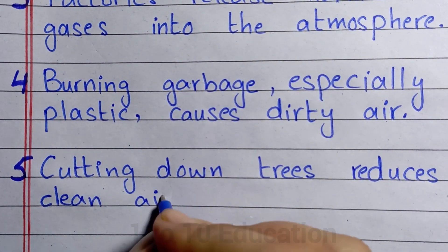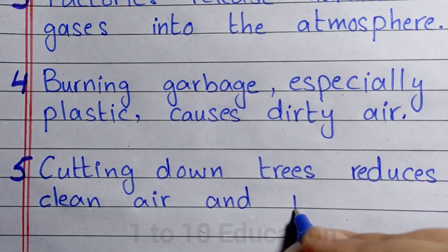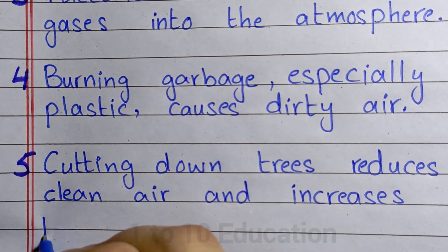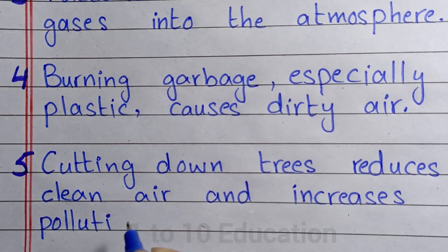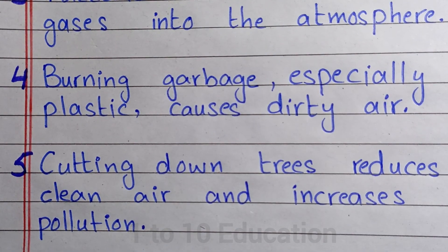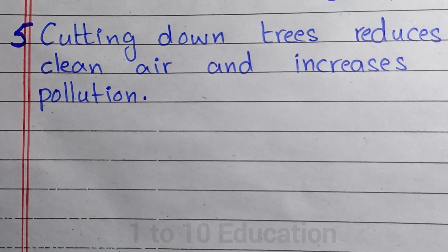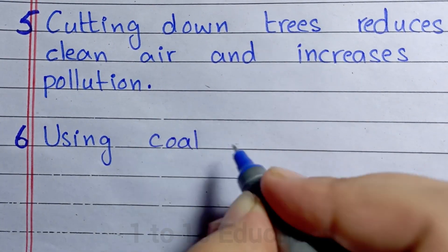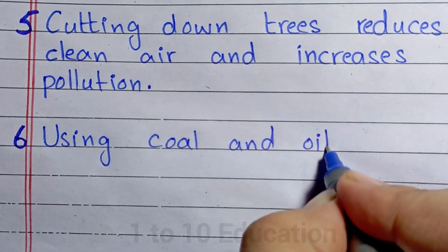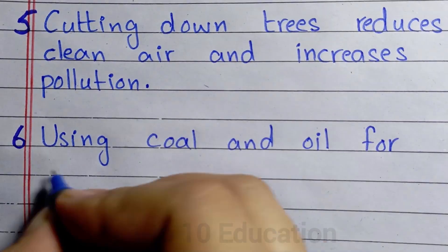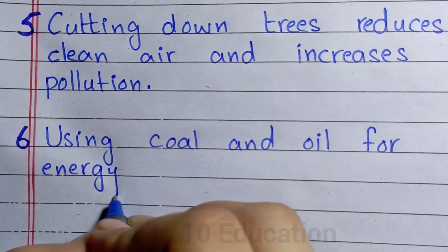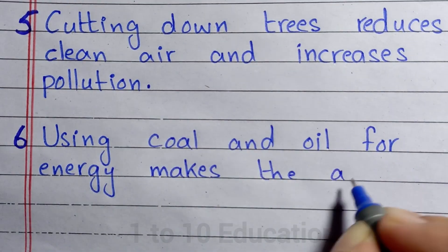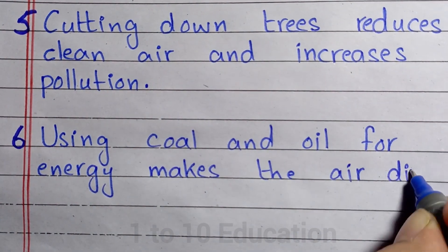Number 5: Cutting down trees reduces clean air and increases pollution. Number 6: Using coal and oil for energy makes the air dirty.